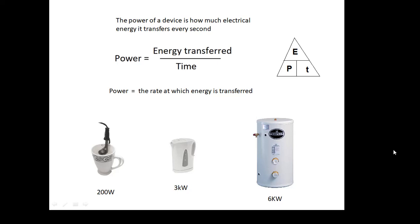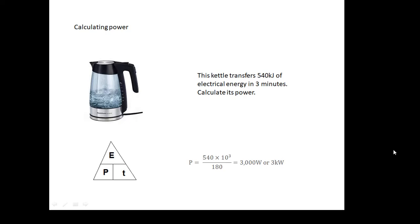and the big immersion heater, 6 kilowatts. Six thousand joules per second is being transferred. Calculating power: we need to use this equation here. Power is energy over time. You'll be given it in the exam, but there's a little triangle for now. This kettle transfers 540 kilojoules of electrical energy in 3 minutes. Calculate its power. So 540,000, or 540 × 10³, divided by 180 because the time is in seconds, and that gives 3,000 watts or 3 kilowatts.